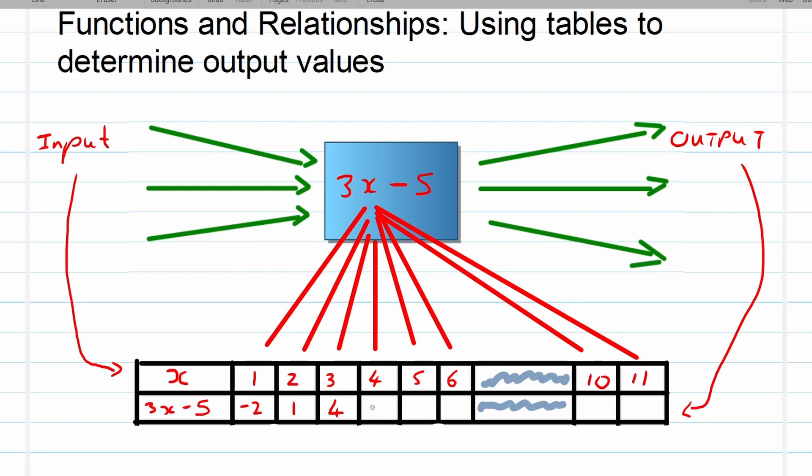4 times 3 is 12, 12 minus 5 is equal to 7. 5 times 3 is 15, 15 minus 5 is equal to 10. 6 times 3 is 18, 18 minus 5 is equal to 13, and so on and so forth.